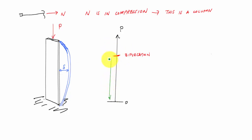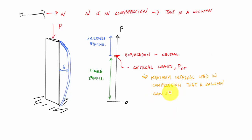While this region will have been stable equilibrium, this bifurcation represents a neutral equilibrium, the condition right before the structure becomes unstable. And this load, this value of the force right here, just before we reach this unstable equilibrium or buckling, we call this the critical load. And if you need a definition, this would be the maximum internal load in compression that a column can support before buckling.